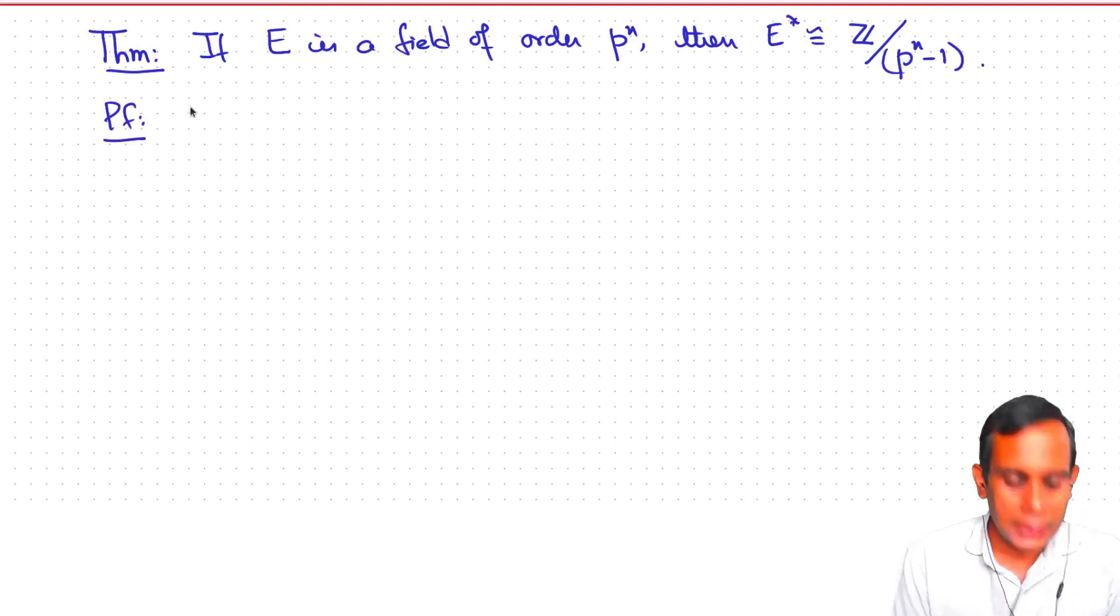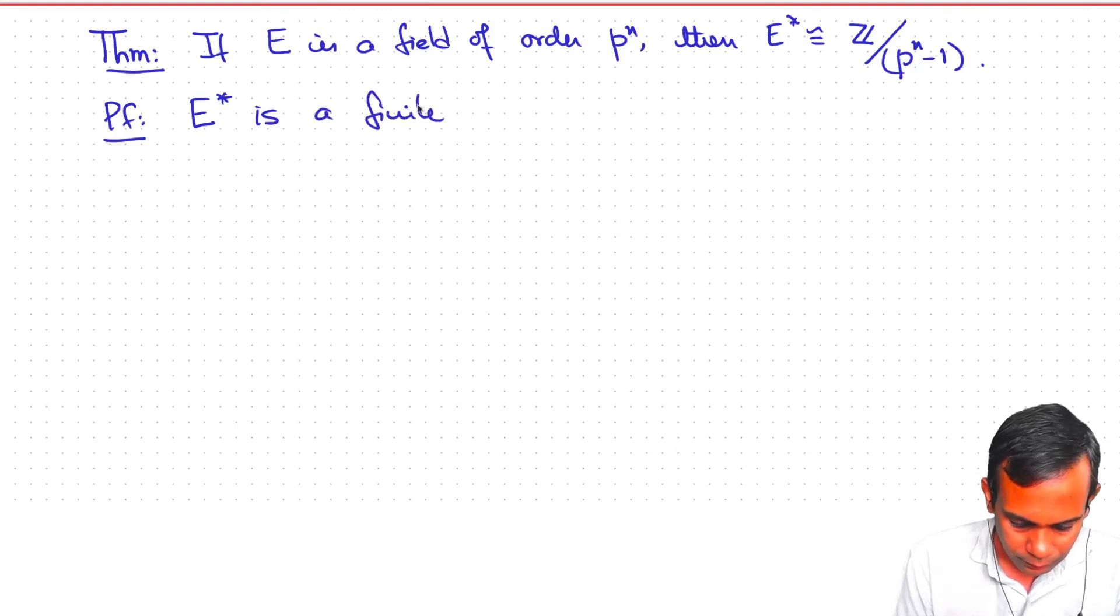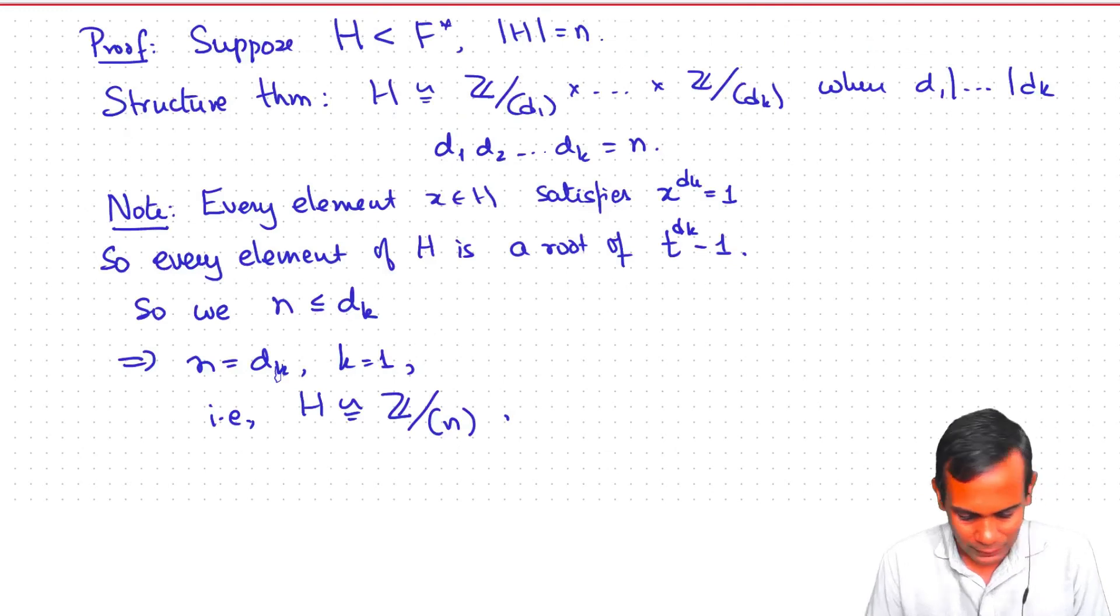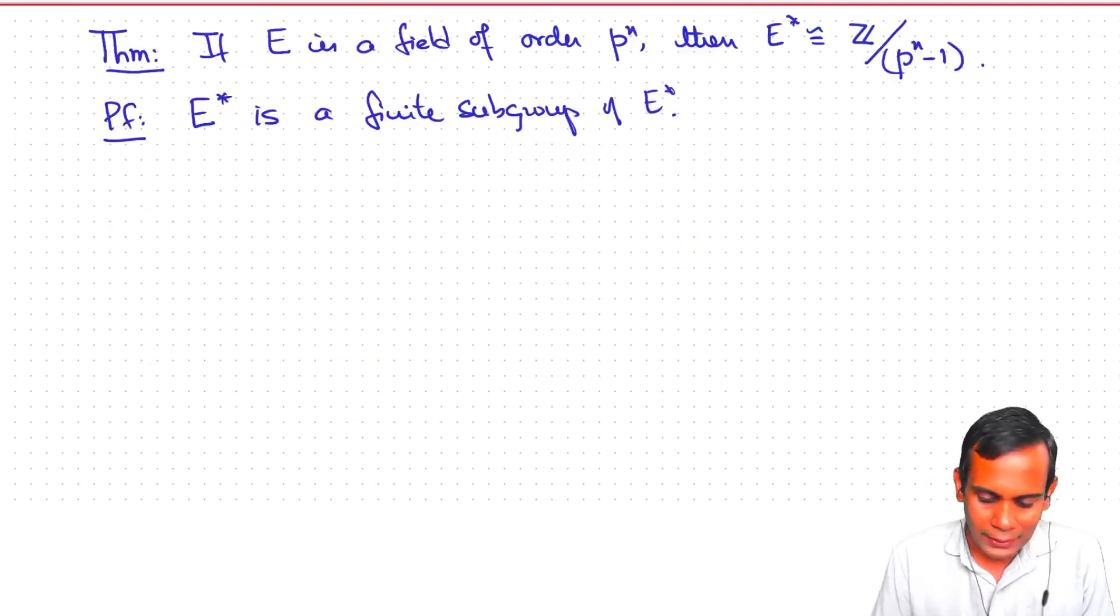Well, E star is a finite subgroup of E star. It is the full group and it is finite because E is finite. And so, the previous theorem applies. E star has to be cyclic and its order is p to the n minus 1. So it is the cyclic group of order p to the n minus 1.